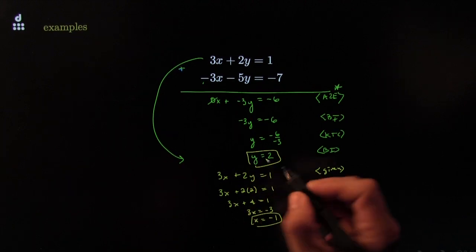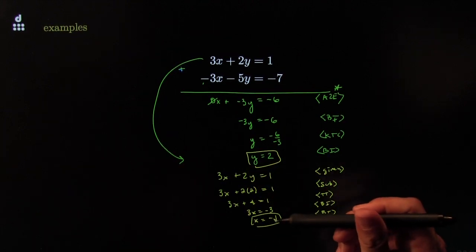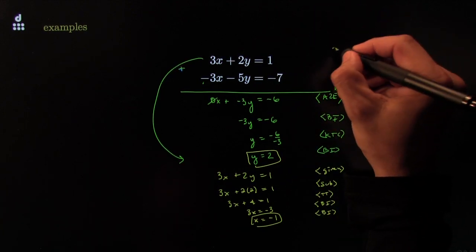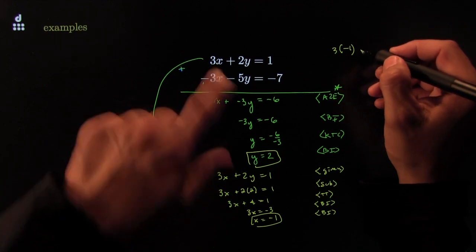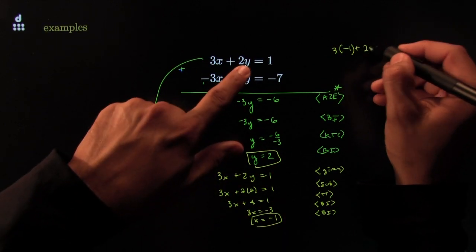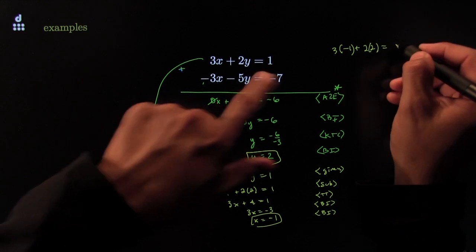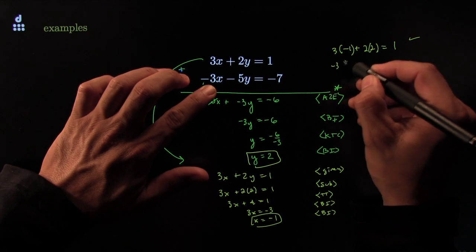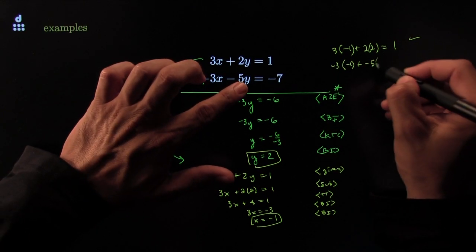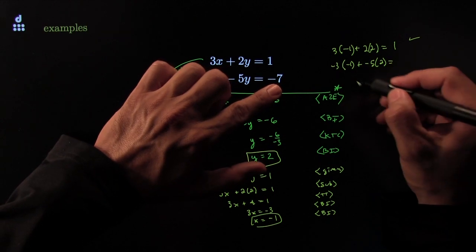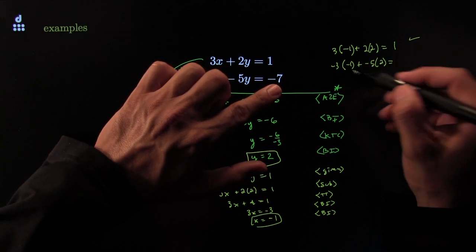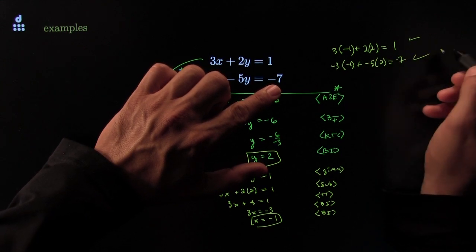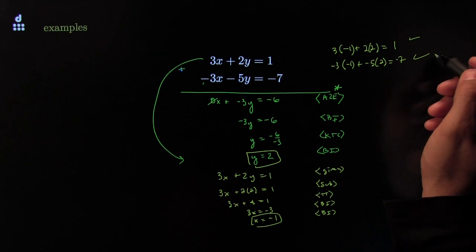Yippee-ki-yay — our solution is x equals negative 1 and y equals 2. Let's check: 3 times negative 1 plus 2 times 2 — is that equal to 1? I get negative 3 plus 4, which is yes, equal to 1. Check that it works on the other equation: negative 3 times negative 1 plus negative 5 times 2 — is that equal to negative 7? Here I get positive 3 and here I get negative 10, so negative 10 plus positive 3 is indeed negative 7. Yippee-ki-yay. See why they pay me? It's beautiful.